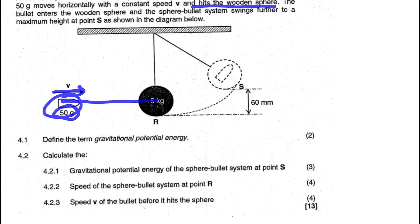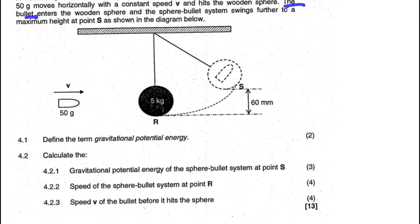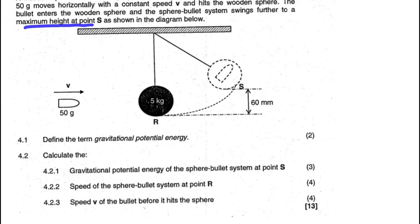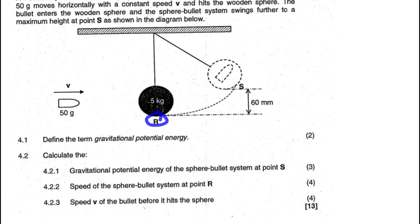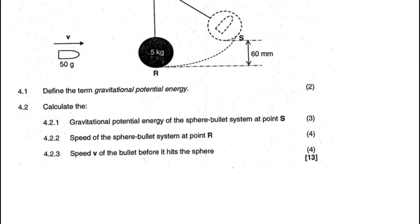The bullet, with a mass of 50 grams, hits the wooden sphere. The bullet enters the wooden sphere and the bullet-sphere system swings further to a maximum height at point S. The bullet is embedded inside, and it swings to that height. The height is 60 millimeters at point S, and the lower position is called point R, as shown in the diagram.